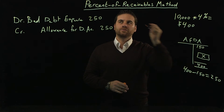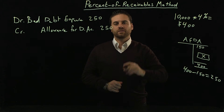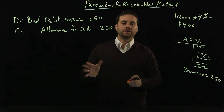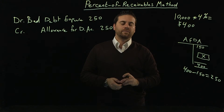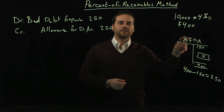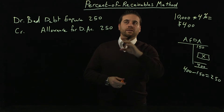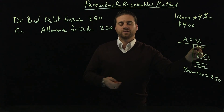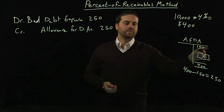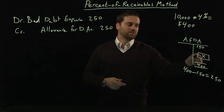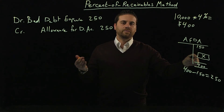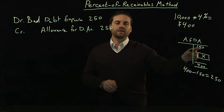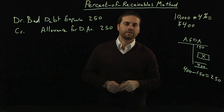There's one extra step using the percentage of receivable method compared to the sales method. With the sales method, you just multiply and that amount goes directly to the journal. But with the percentage of receivable method, you have to make a T-account first and then find out the difference. It might be a beginning balance of zero if you never did it before — so if it starts at zero, the journal amount will also be $400. But if there was a beginning balance that's changing, then you need to do the math.